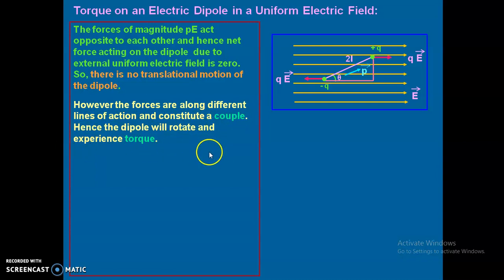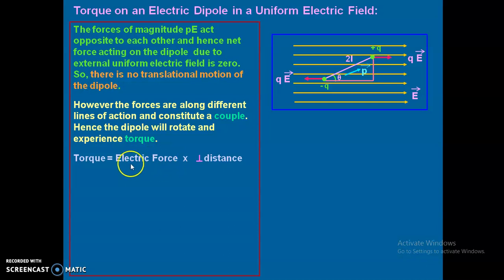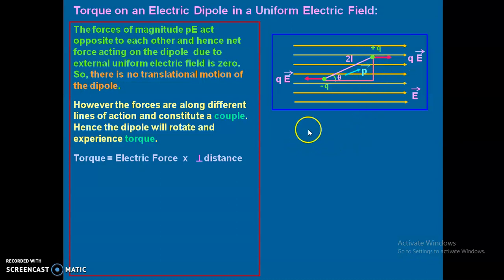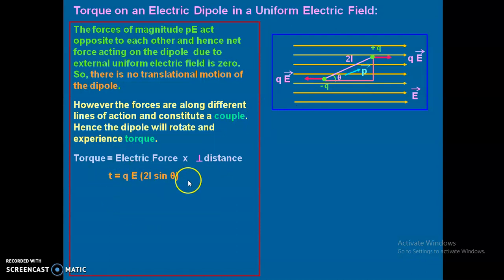The dipole will experience a torque. The torque formula for a couple is the magnitude of either force multiplied by the perpendicular distance between their lines of action. The perpendicular distance between the lines of action of the two forces is 2l sinθ. Therefore, torque τ = qE × 2l sinθ.